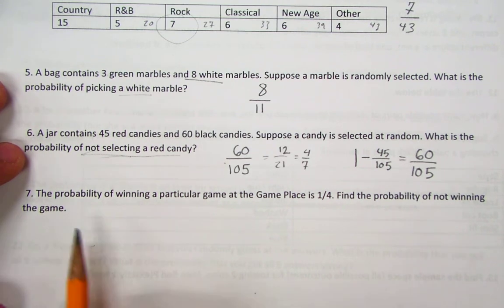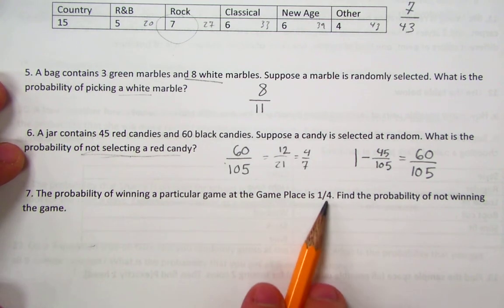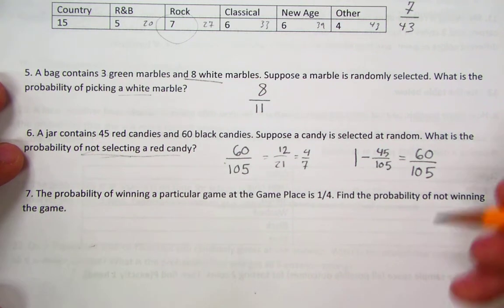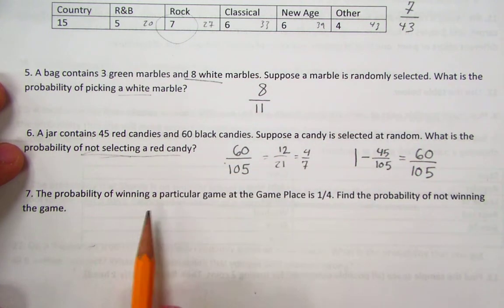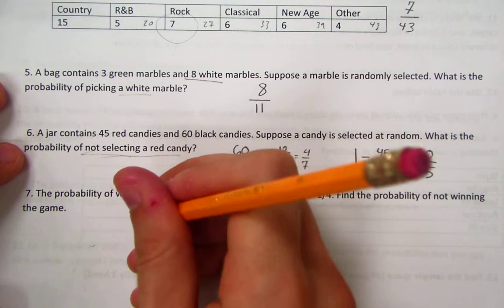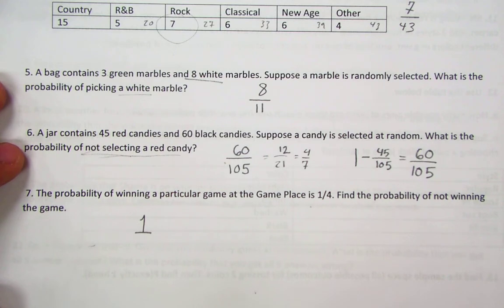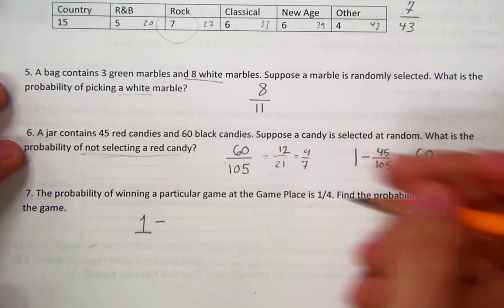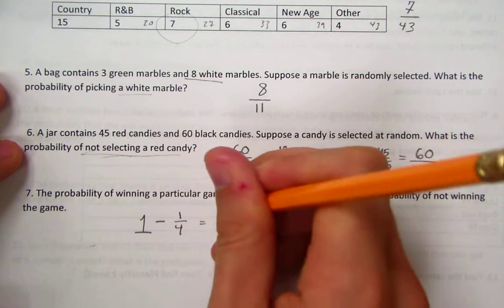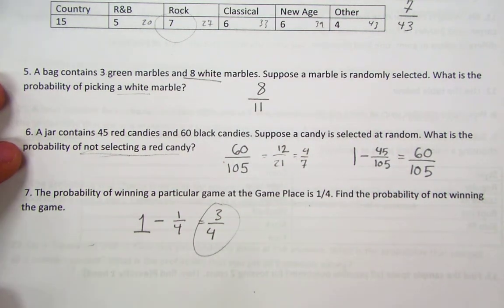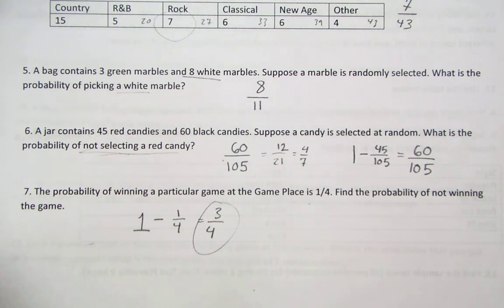Number 7: The probability of winning a particular game at the game place is 1 out of 4. Find the probability of not winning the game. This tests your knowledge of the third law of probability, which is that the probability of an event occurring plus the probability of an event not occurring is equal to 1. So we can take 1 as the total possibility of anything, 100%, and subtract from that the probability of winning the game, which is 1 out of 4, and we're left with the probability of not winning the game, 3 out of 4. Most of you got that right. Congratulations. We'll go on to page 2 in the next video.